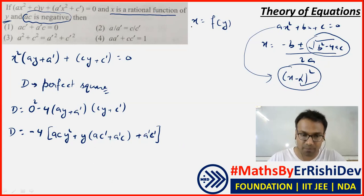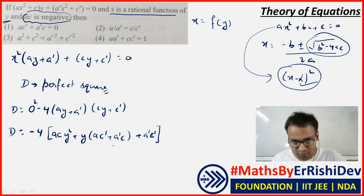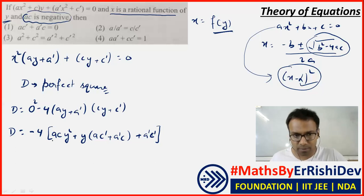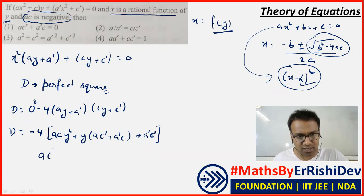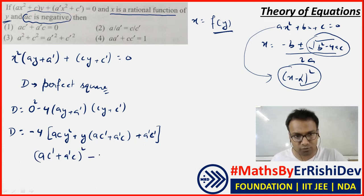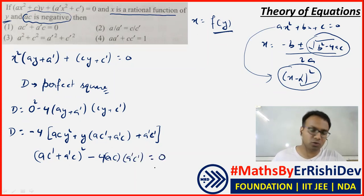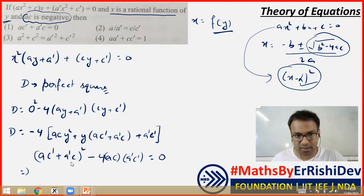So I will find the discriminant of this expression in y. The discriminant will be b² = (ac' + a'c)² minus 4ac, where a·c = ac and the constant term is a'c'. So the discriminant is (ac' + a'c)² - 4·ac·a'c'. This has to be equal to zero.